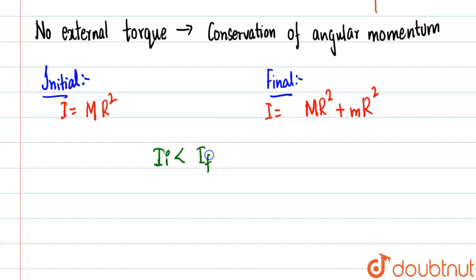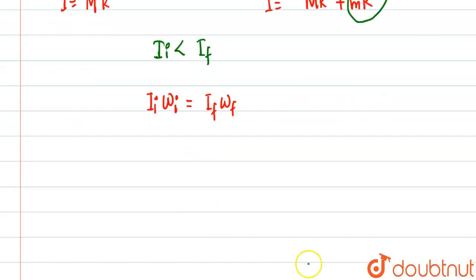If we talk about the conservation of angular momentum: I_i·ω_i must be equal to I_f·ω_f. If you see that I_i is less than I_f, that means—